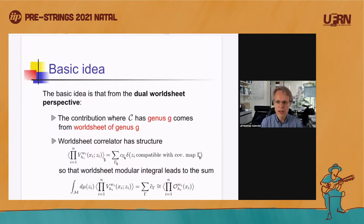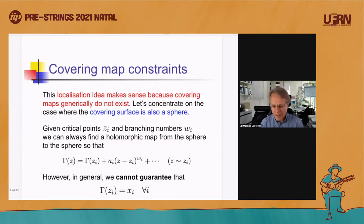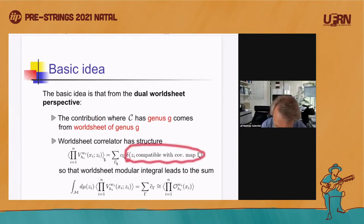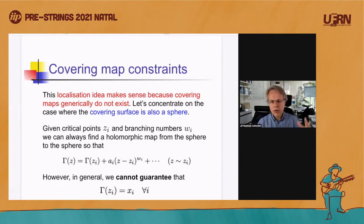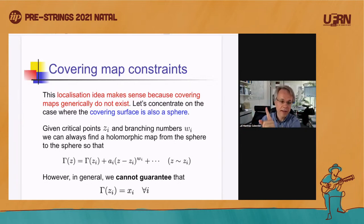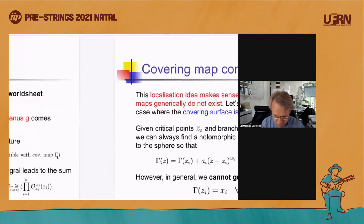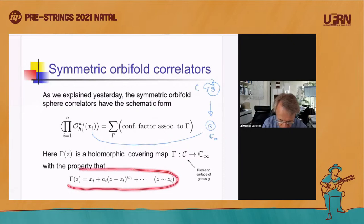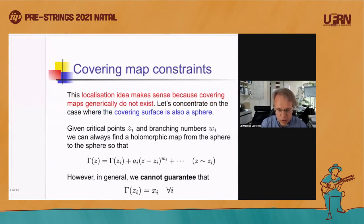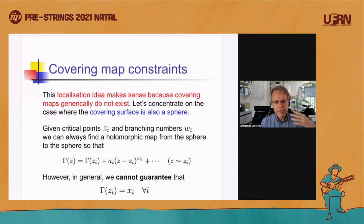This is a bold statement. Let me explain why it has a chance to be true, and then convince you it actually is true and can be proved. This localization — the fact that the world-sheet correlator is zero except when the Z's satisfy some magic constraint — is very natural because covering maps generically do not exist. They're a rare commodity. If you specify the Z's and the X's and the branching ratios, generically there will be no solution to the covering map problem.